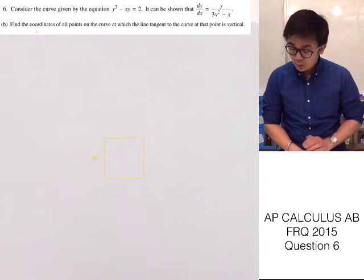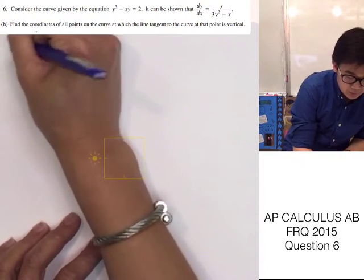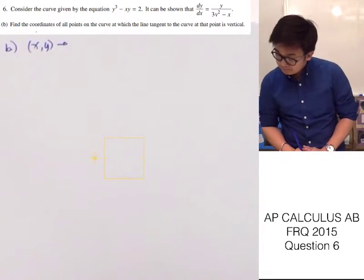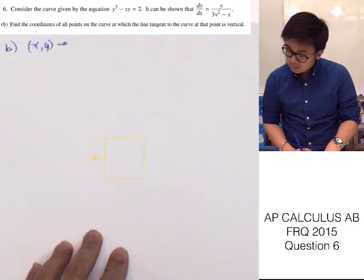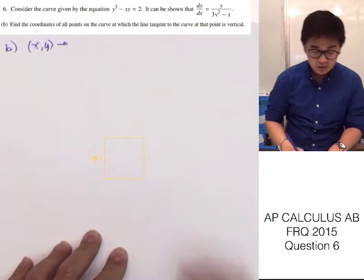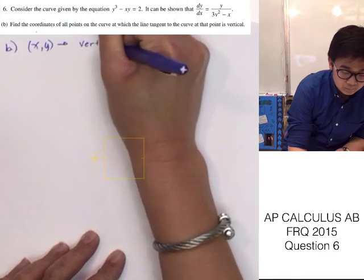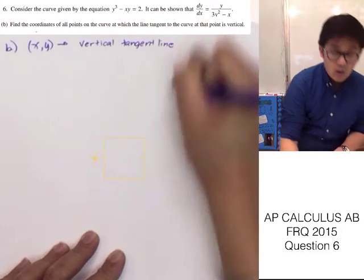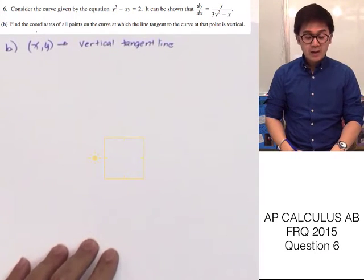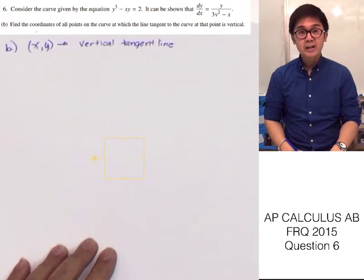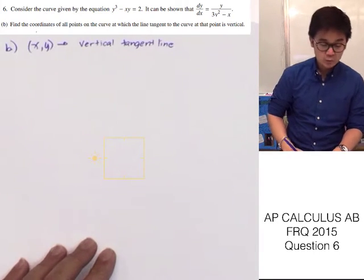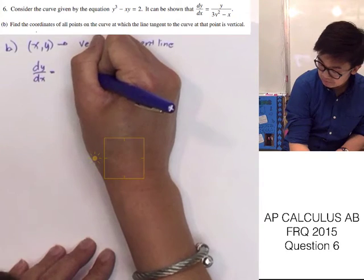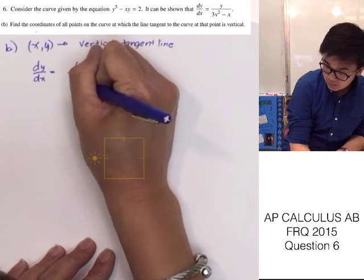To answer part b, we need to find the coordinates of all the points on the curve where the tangent line is vertical. We know that a vertical line exists when the slope is undefined, and the slope is undefined when the denominator equals 0. The given slope dy/dx equals y over 3y squared minus x.